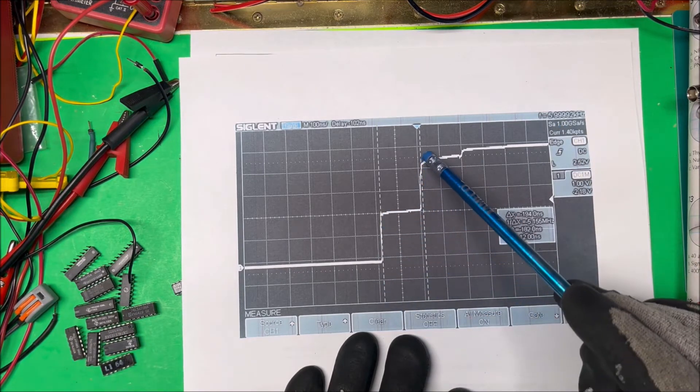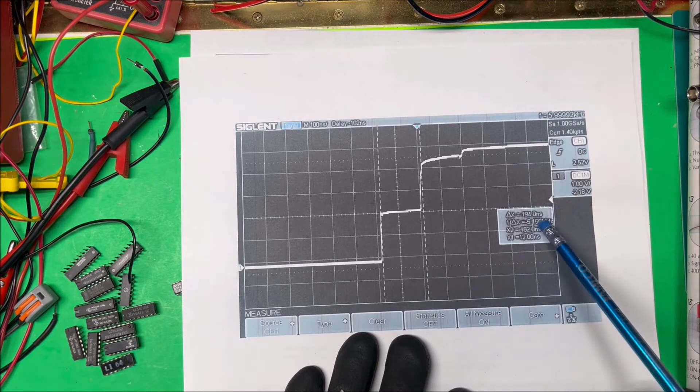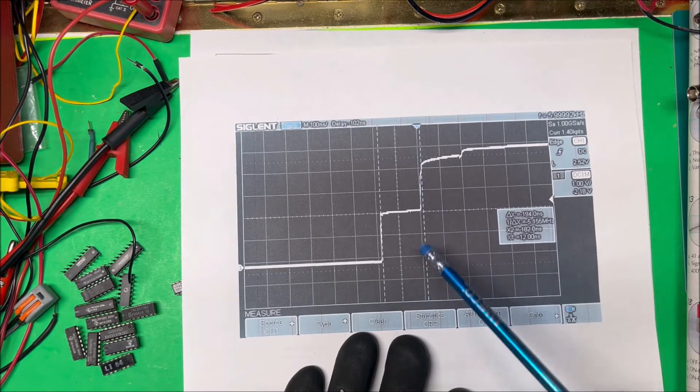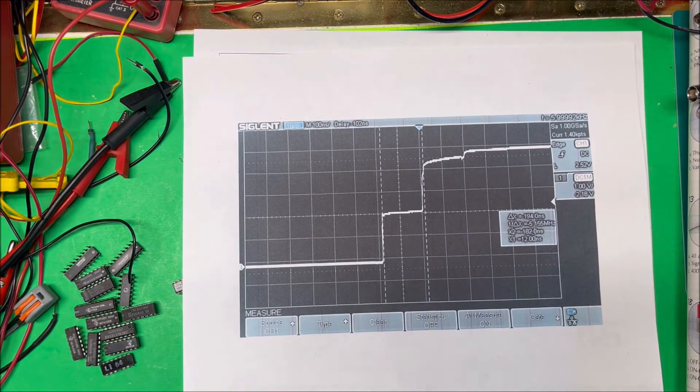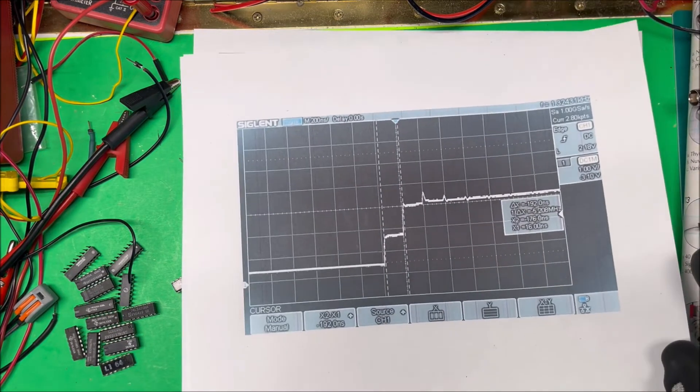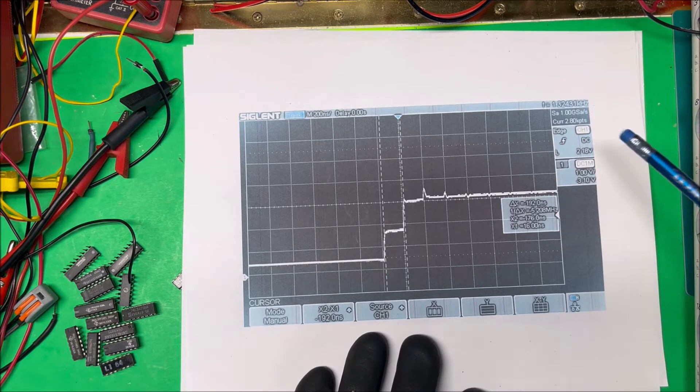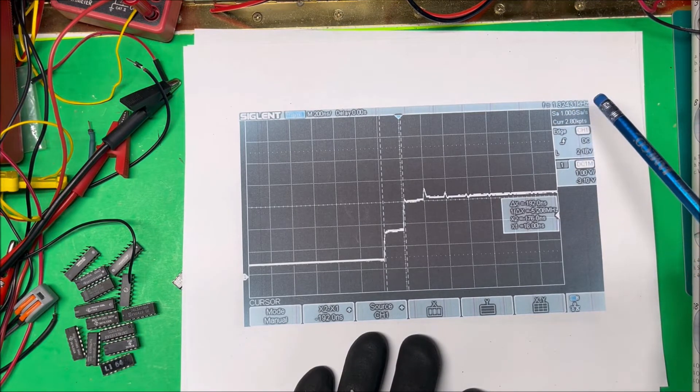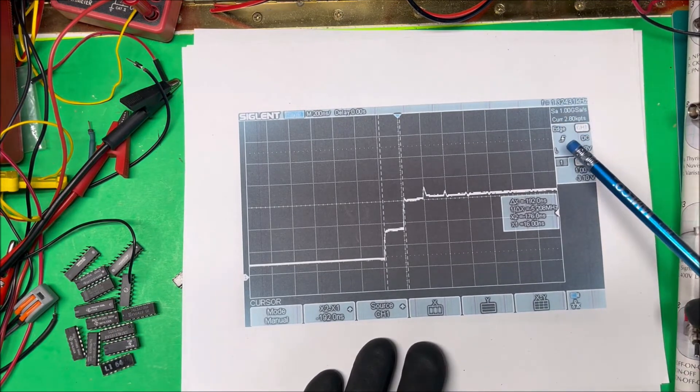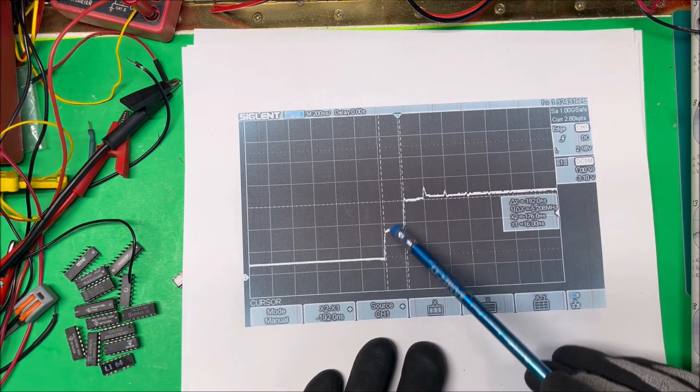So then we put our cursors on here and it came up to 194 nanoseconds between the two there. Now I did it with the unit I made up here, the Schmitt trigger one, and my frequency is only at 1.3 kilohertz, so I'm going to increase that, but the pulse is pretty straight.